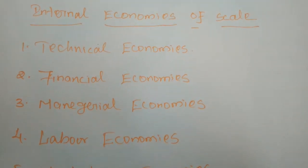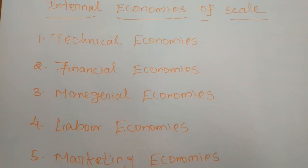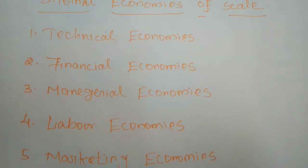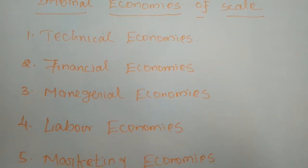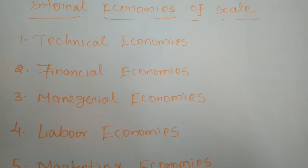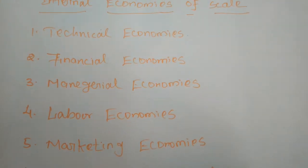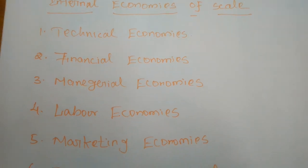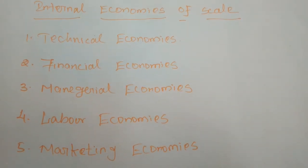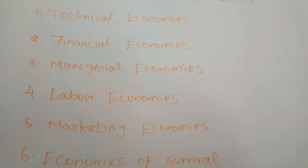Next are financial economies. Big firms can float shares in the market for capital expansion, while small firms cannot easily do so. Large-scale industries have the power and the right to issue their shares. After establishing and continuing their business activities, by issuing shares they can get more financial advantages — more income of finance. The advantages earned by a business organization through issuing shares is called financial economies.